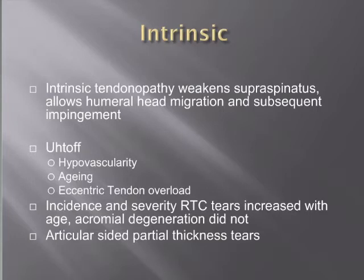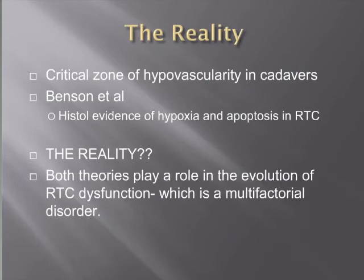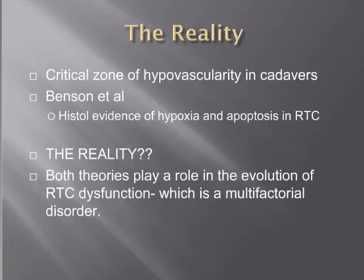Uhthoff also performed cadaveric studies and defined a critical zone of hypovascularity on the articular side, from the musculotendinous junction to within about 5mm of the insertion at the greater tuberosity. This was further supported by Benson, who did histological studies finding evidence of hypoxia and apoptosis in tenocytes of the rotator cuff. The reality, which most would agree with, is that both theories play a role and rotator cuff dysfunction is a multifactorial disorder with contributions from both etiologies.